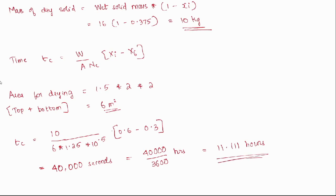The final answer is 11.111 hours. What we did was: given NC directly, we calculated the drying area A from the dimensions (top and bottom surfaces only), found the dry solid mass W from the wet solid mass and initial moisture content, then substituted all values into the time equation.